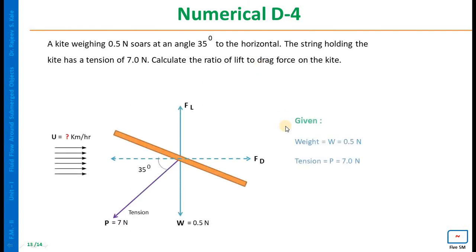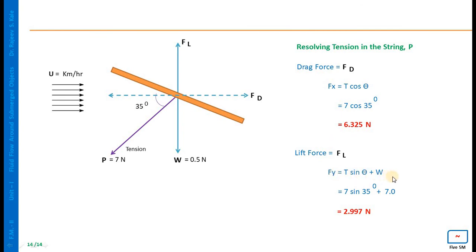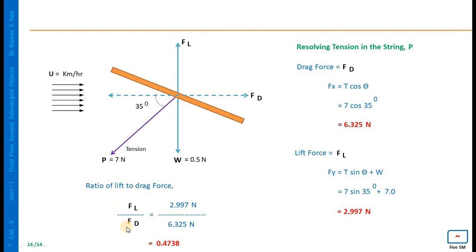In this case, velocity of flow is not known; weight and tension in the string are given. We need to find the ratio of lift force to drag force. Draw the neat sketch. Since tension is known, resolve it into horizontal and vertical components. Fx = T cos θ = 6.325 N, which is nothing but the drag force. Similarly, the vertical component (lift force) Fy = T sin θ + W = 2.997 N. Taking the ratio of lift force to drag force, it comes to 0.4738.